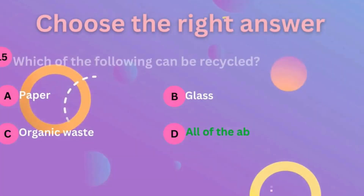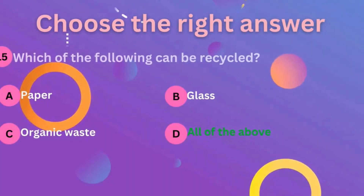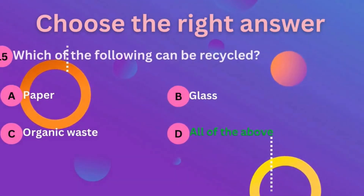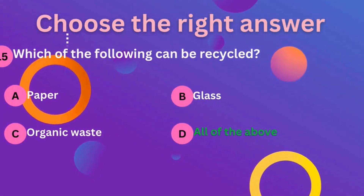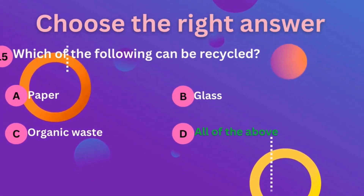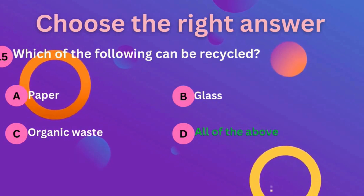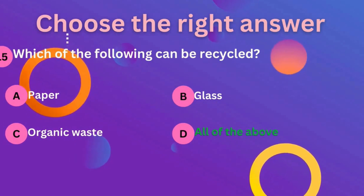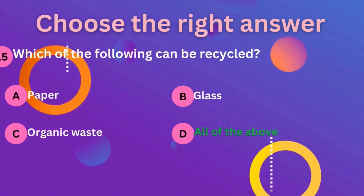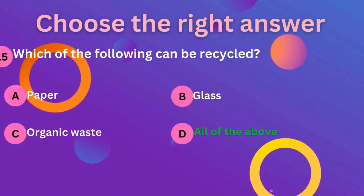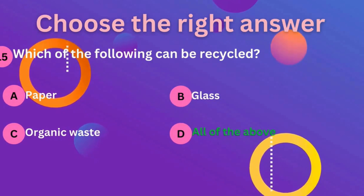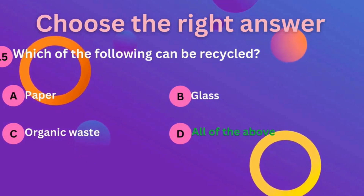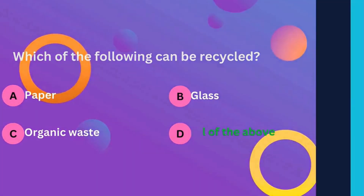Question number 15: which of the following can be recycled? We can recycle paper, glass, as well as organic waste. So D is the correct answer — that is all of the above.